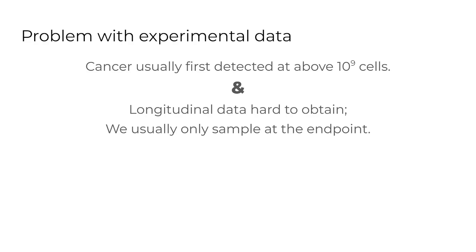So if you want to discover the history of the tumor, one option is to simulate — to start with the initial configuration of a healthy cell or population of healthy cells and try to get to the final configuration of where you were sampling the tumor. If you match that, there is a chance that the simulation process somehow represents the actual growth process of the tumor you were sampling.